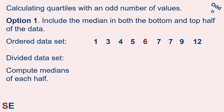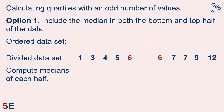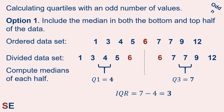For Option 1, we include the median in both the bottom and top half of the data. In our example, the bottom half includes 1, 3, 4, 5, and 6 (the median). Q1 is the median of that set, which is the 4, the value in the middle. The top half has 6, 7, 7, 9, and 12, so Q3 is the middle value there, which is 7. So our IQR would be 7 minus 4 is 3.